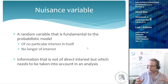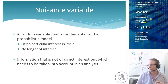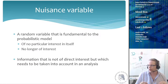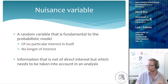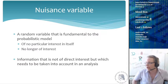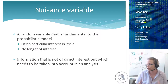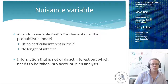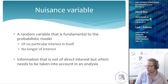A nuisance variable is a random variable that is fundamental to a certain probabilistic model. We're building a model and trying to model some kind of event, but a nuisance variable is something which is of no particular interest in itself, or which is no longer of interest because we already know the effect that variable has on our measurements. You can think of it as, for example, the temperature outside.